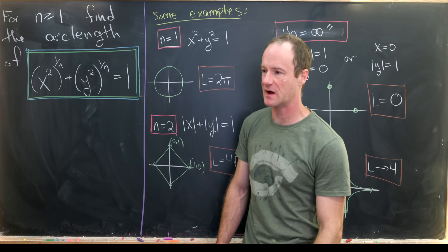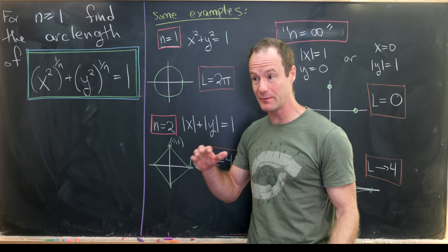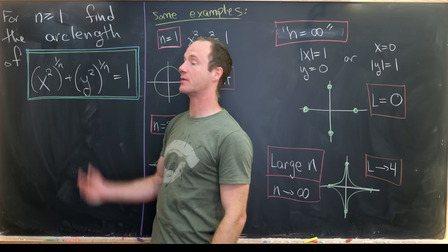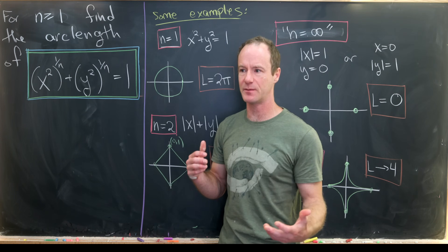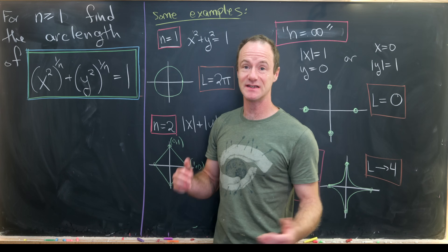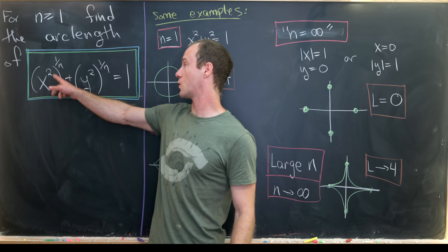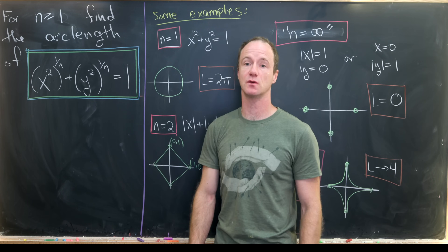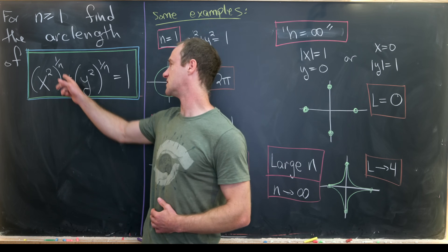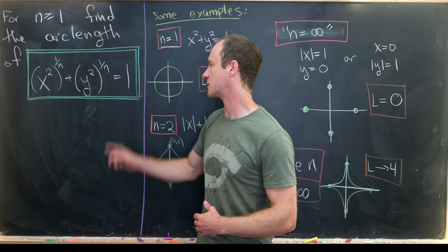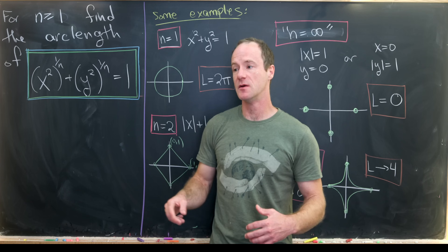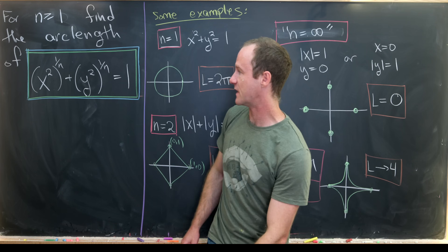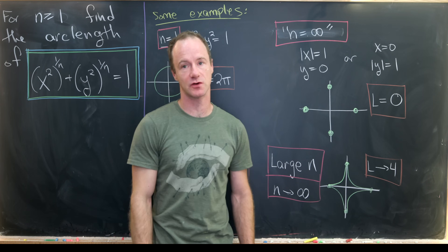Today I've got a pretty interesting problem: to find the arc length of a family of curves that sort of looks like circles. For natural number n, we'd like to develop some sort of system to describe the arc length of (x²)^(1/n) + (y²)^(1/n) = 1. Notice we could write that as x^(2/n) + y^(2/n) = 1, but writing it the first way makes it clearer what's happening for negative values of x and y, in that we square them out first.